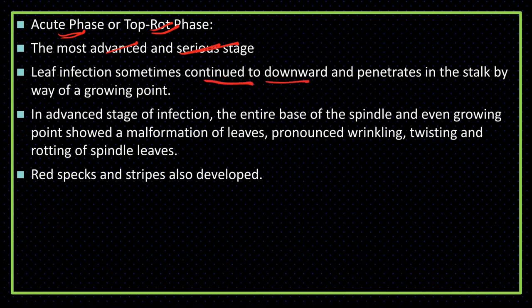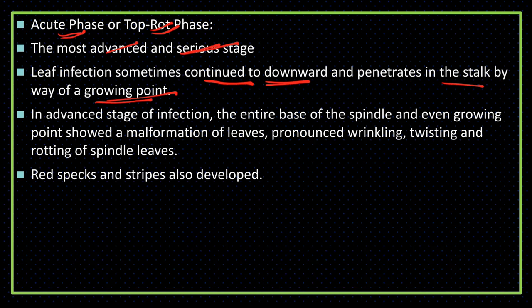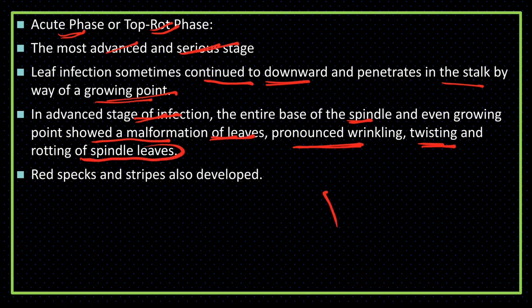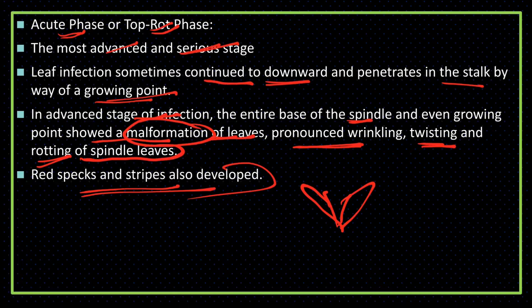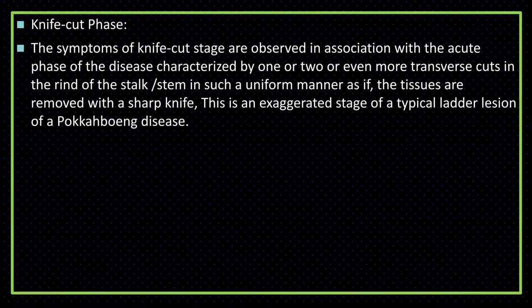In the advanced stage of infection, the entire base of the spindle and even growing points show malformation of leaves, pronounced wrinkling, twisting, and rotting of the spindle leaf. The upper leaves show symptoms and the spindle leaf shape becomes completely distorted. Rotting causes growth to stop in the stem. Red specks and stripes also develop at this stage.